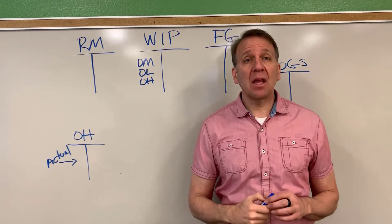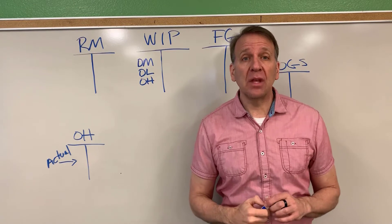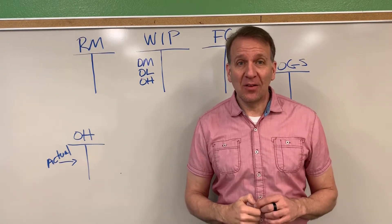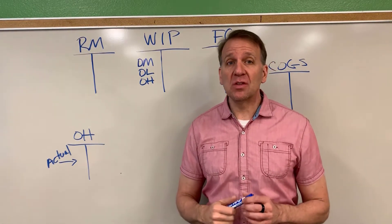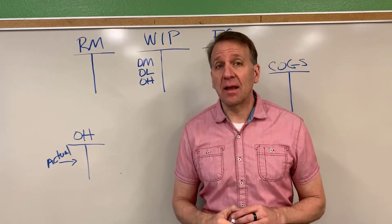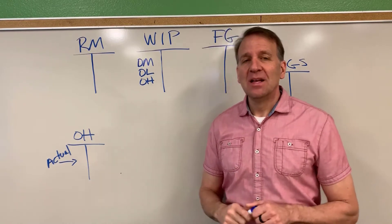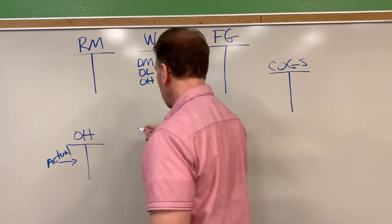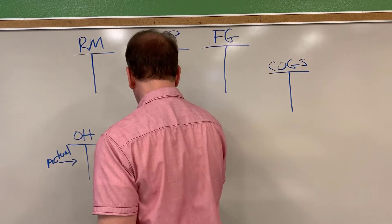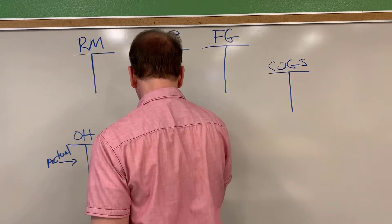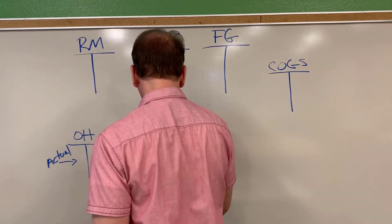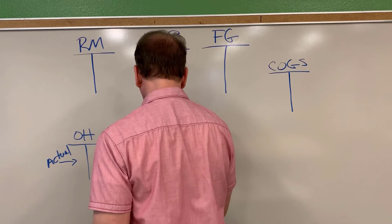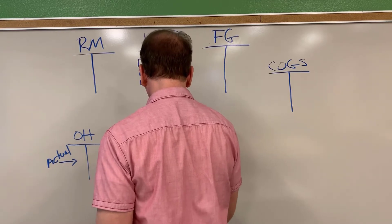First of all, we need to calculate something called a predetermined overhead rate. This rate is used for that allocation purpose. Let me write down the formula for a predetermined overhead rate.